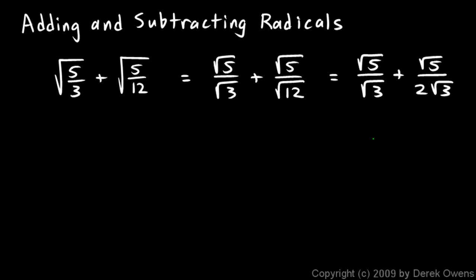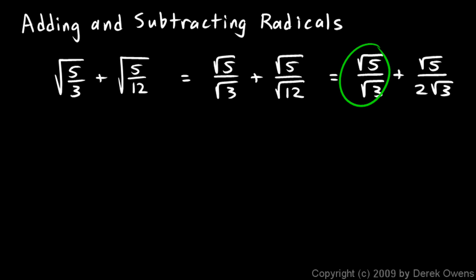Now I can combine these two terms if they have the same denominator, and they don't quite. I have a square root of 3 here, and I have 2 square root of 3 here. But if I take this first fraction and multiply it by 2 over 2 — I'm allowed to multiply the top and bottom by the same thing, essentially multiplying by 1, which doesn't change it — I now have a denominator that's the same as the other. So those two fractions can now be combined.